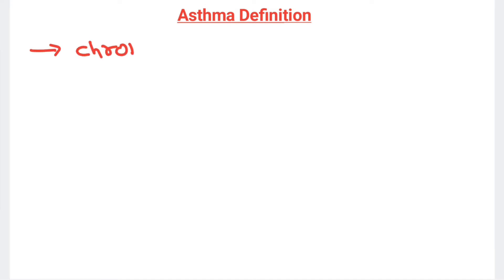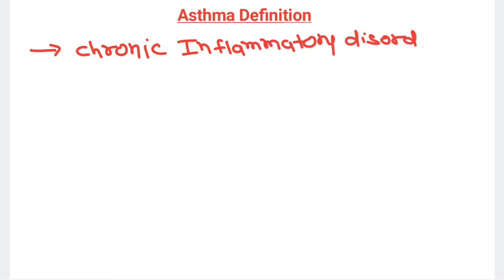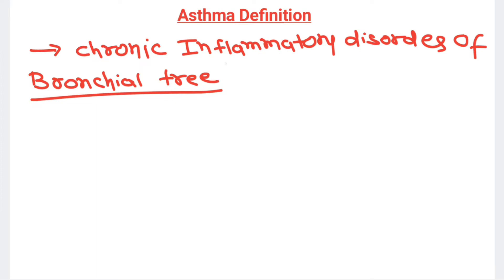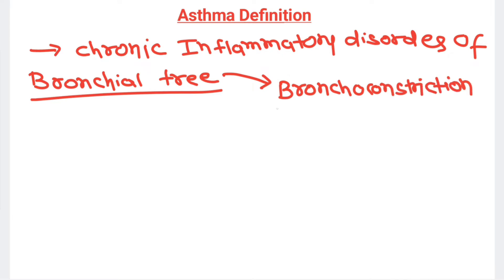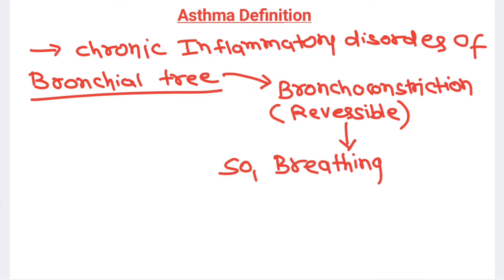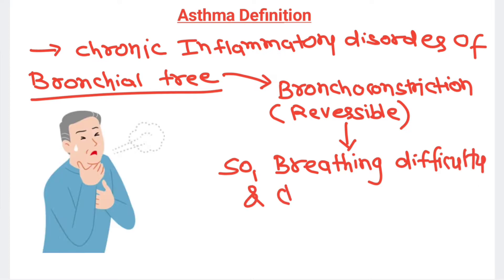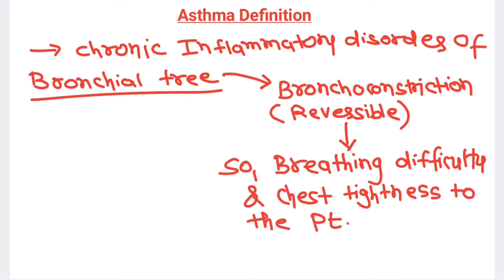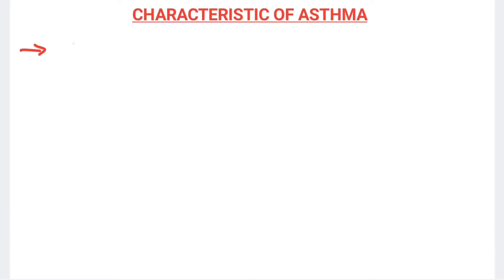Hello everyone, today I am going to teach you about asthma — this is part one of asthma. The definition: asthma is a chronic inflammatory disorder of the bronchial tree. Because of inflammation of the bronchial tree there will be bronchoconstriction, which is usually reversible. Because of this bronchoconstriction the patient will complain of breathing difficulty and chest tightness. That is the definition of asthma.